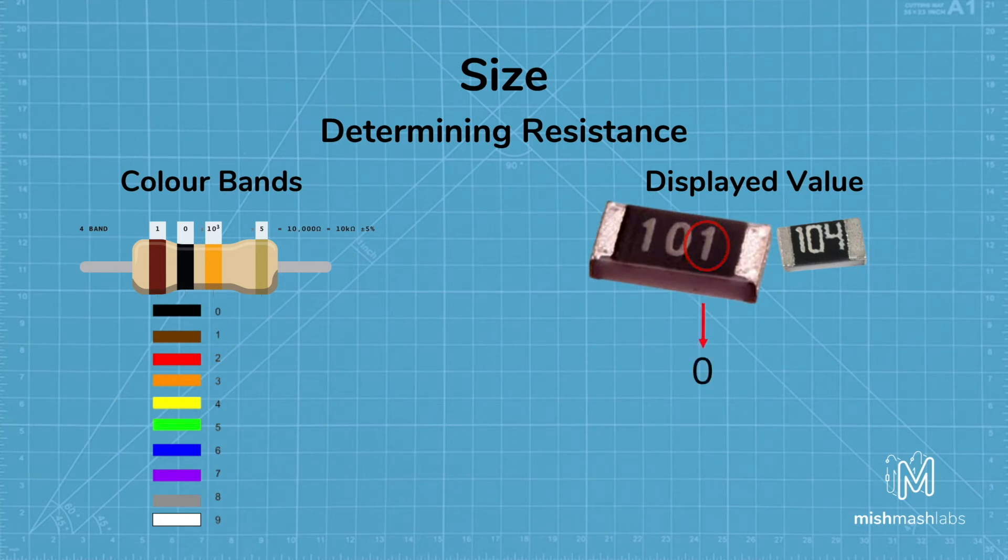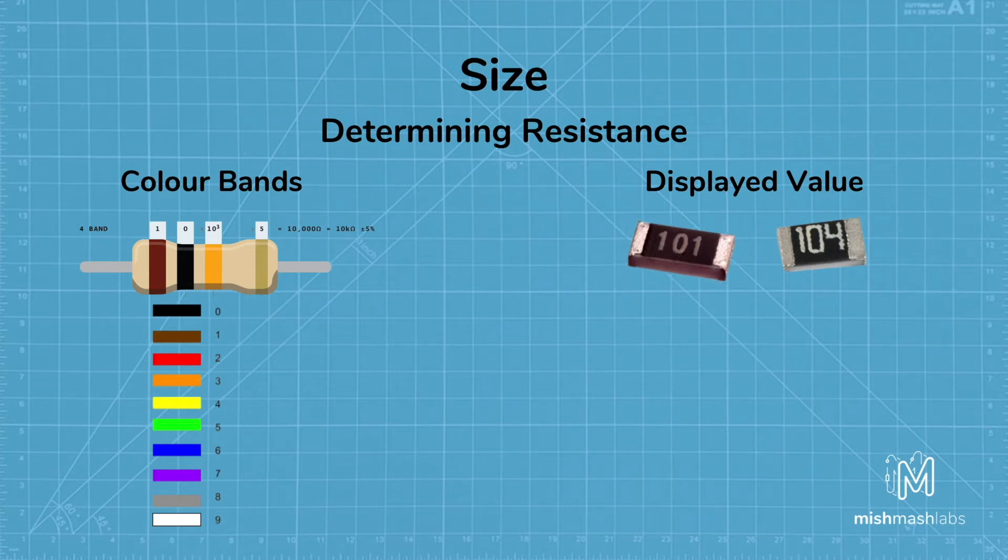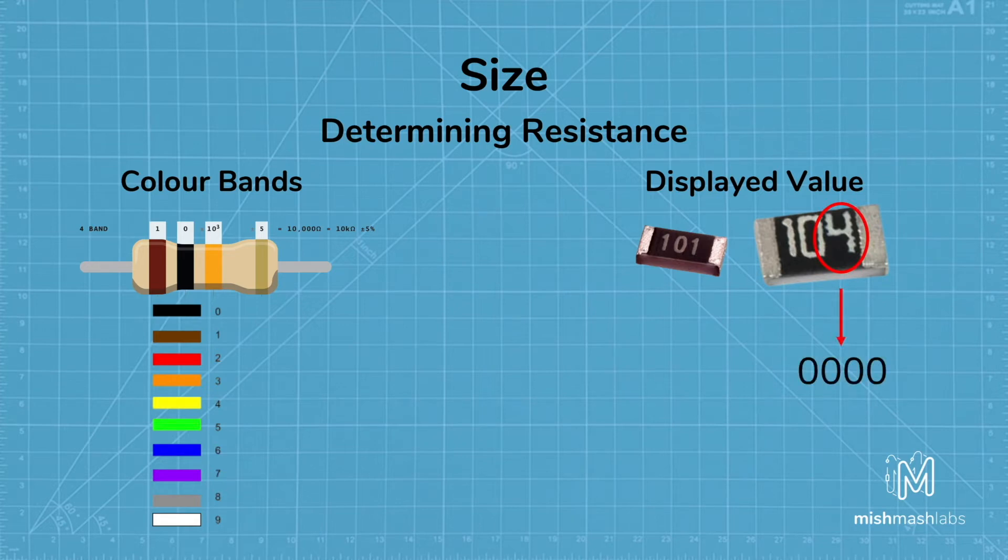In this example we see the third number is number one, which indicates we need one zero appended after the first two numbers, the one and the zero, giving us 100 ohms. In this second example, 104, the third number, 4, indicates that we need to append four zeros to the remaining numbers, 10. This gives us 100,000 ohms or 100 kilo ohms.